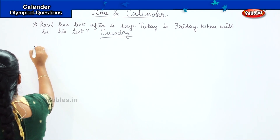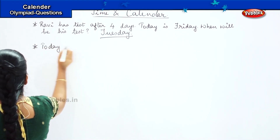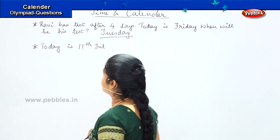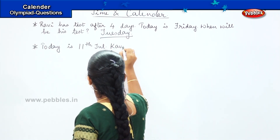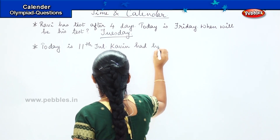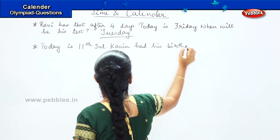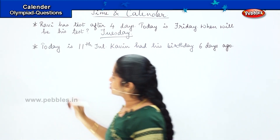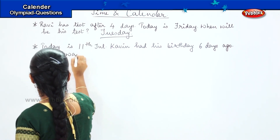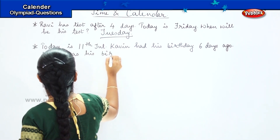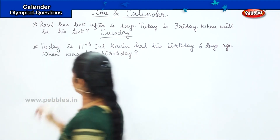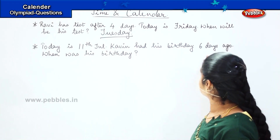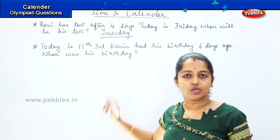Now the next question is: today is, say, 11th July, and Kavan had his birthday six days ago. So when was his birthday? Did you understand the question? Today is 11th July and Kavan had his birthday six days ago. So you have to find out when was his actual birthday.